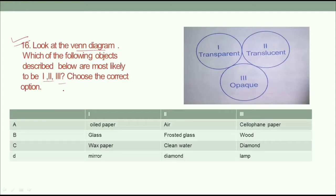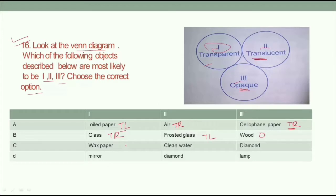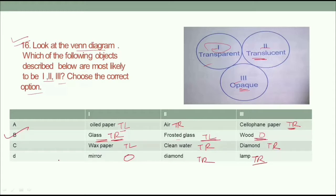Question number 16: look at the Venn diagram. Three objects are given — first, second, and third. The first should be transparent, the second should be translucent. Looking at the options: oiled paper is translucent; cellophane paper is transparent — it's a sheet with no color; clear glass is transparent; frosted glass is translucent; wood is opaque; wax paper is translucent; clean water is transparent; diamond is transparent; mirror is opaque. So our answer will be option B: the first is transparent, the second is translucent, and the third is opaque.